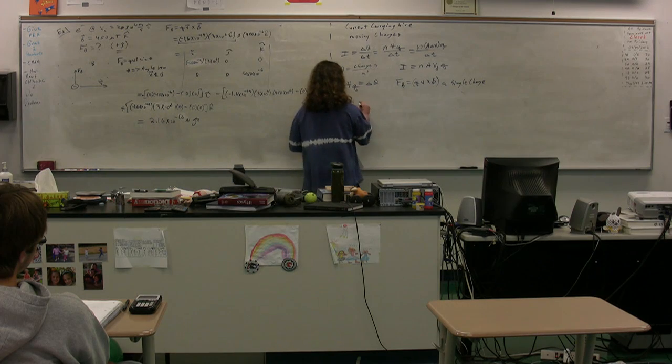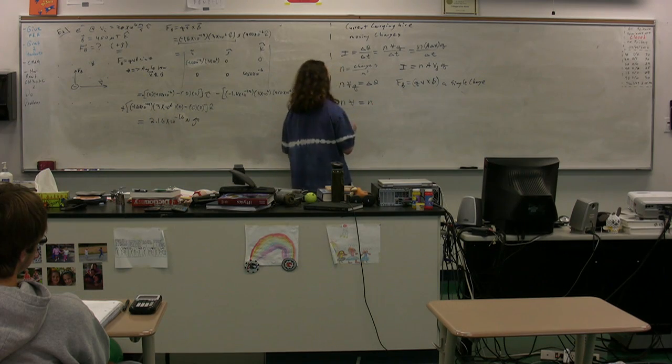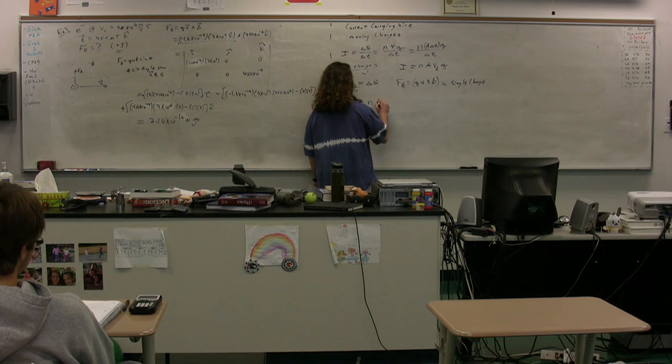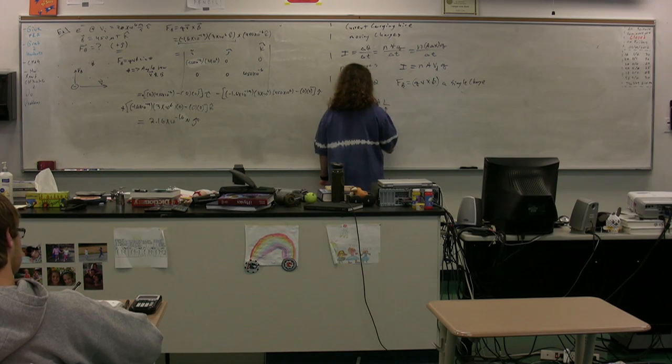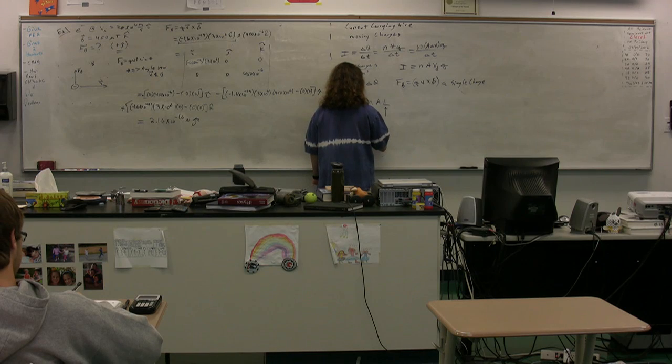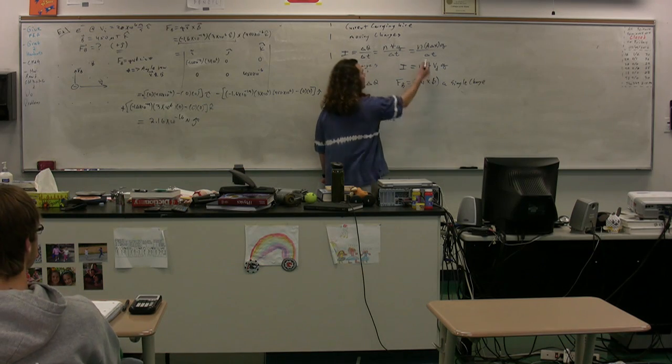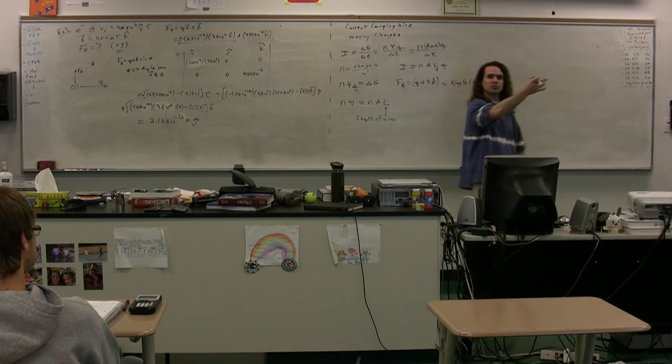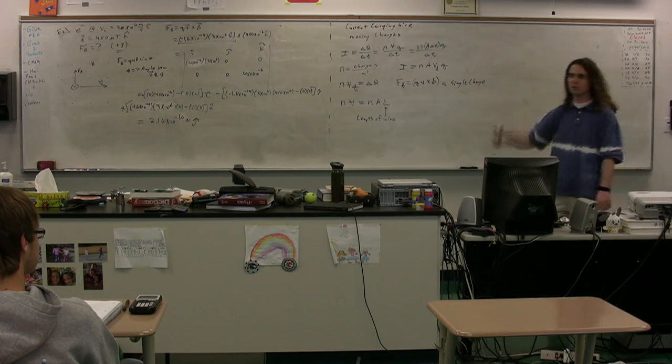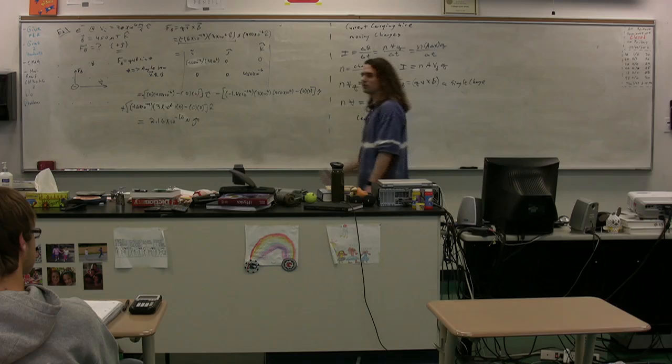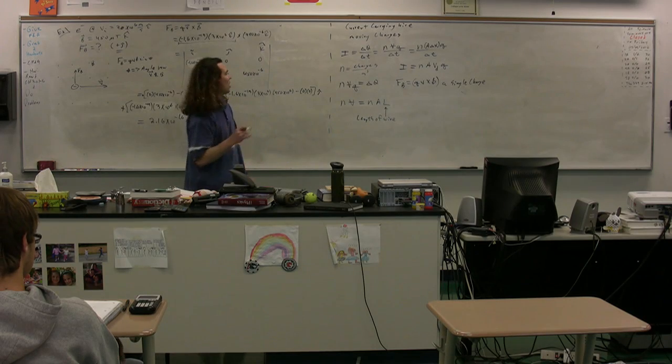This volume is equal to the cross sectional area multiplied by an L. Now, L is the length of the wire. Note what we did before was we just talked about delta x, which was just some amorphous displacement. Now we're actually referring to it as specific. It is the length of the wire.